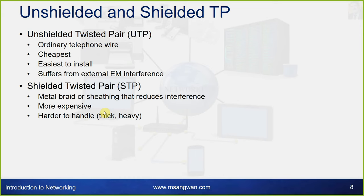There are unshielded and shielded variants: UTP and STP. Unshielded twisted pair (UTP) is ordinary telephone wire — the cheapest and very easy to install, but it suffers from external electromagnetic interference. Shielded twisted pair (STP) has a metal braid for shielding that reduces interference; however it is more expensive and harder to handle because it is thick and heavy.